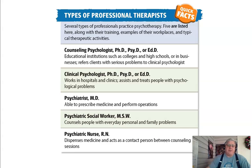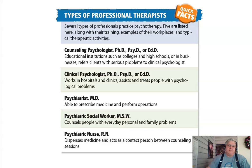A counseling psychologist holds a Ph.D., Psy.D., or Ed.D. and typically works in educational institutions such as colleges, high schools, or businesses, referring clients with serious problems to clinical psychologists. Clinical psychologists usually hold a Ph.D., Psy.D., or Ed.D. and work in hospitals and clinics, assisting and treating people with psychological problems. Psychiatrists are MDs able to practice medicine and perform operations. Psychiatric social workers counsel people with everyday personal and family problems. Psychiatric nurses are RNs who dispense medicine and act as contact persons between counseling sessions.